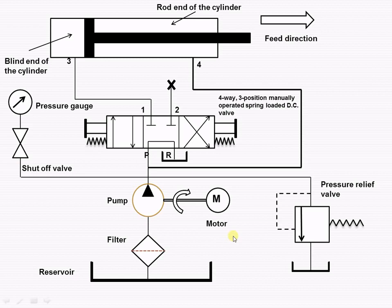This figure shows a regenerative hydraulic circuit which is used to speed up the operation of the cylinder during its outstroke. It uses a three-position four-way direction control valve with its port blocked, and the lines to both ends of the cylinder are connected in parallel, as shown here.